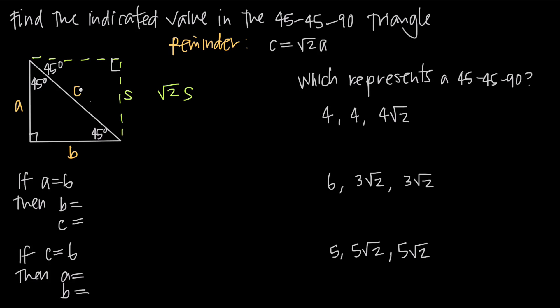In this first problem, we've been told that a equals 6, so this side length is 6. Find the length of B and the length of C. Remember, a 45-45-90 triangle is always one half of a square, which means the two legs of the triangle are always equal because a square has four equal sides. So the side length for A is always equal to the side length for B — we know right away that B is going to be 6. The angle opposite of A is 45 degrees.